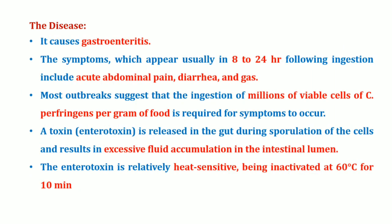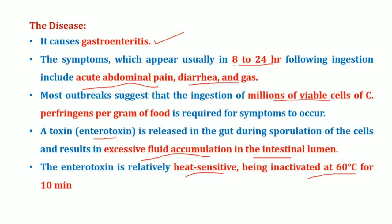The disease caused is gastroenteritis. Symptoms usually start to appear within 8 to 24 hours following ingestion, and include acute abdominal pain, diarrhea, and gas formation. Most outbreaks indicate that ingestion of millions of viable cells per gram of food is required for symptoms to appear. The toxin involved is enterotoxin, which is released in the gut during sporulation of the cells, resulting in excessive fluid accumulation in the intestinal lumen. The enterotoxin is relatively heat sensitive and can be inactivated at 60°C for 10 minutes.